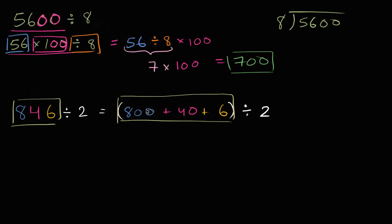Well, how does that help us? Well, now we can divide each of these separately by 2. One way to think about it is we can distribute the division by 2. You might be familiar with using the distributive property on multiplication, but you could also do it with division. So this thing right over here is going to be the same thing as 800 divided by 2, plus 40 divided by 2, plus 6 divided by 2.